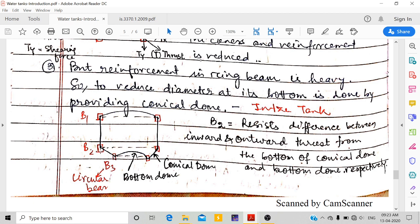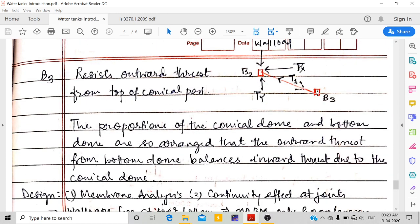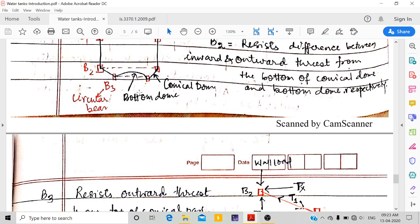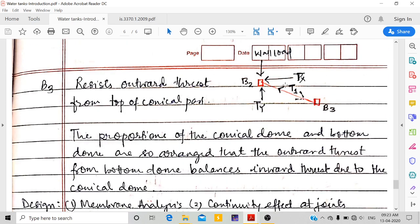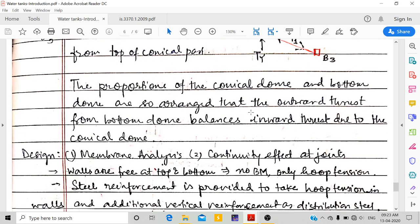And bottom dome respectively. Now B2 and B3 - we have two ring beams. There will be outward thrust from B2 from top of the conical part.